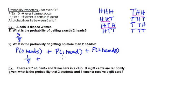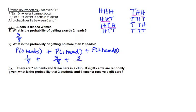Our probability of getting one head: looking at the various combinations that make one head, we have head, tails, tails; tails, heads, tails; and tails, tails, heads. So there are three of those events out of a possible eight. And we already determined that the probability of getting two heads is three eighths. So we can add these numbers together — one eighth plus three eighths plus three eighths — for a total of seven eighths.